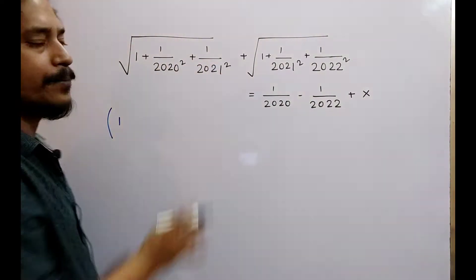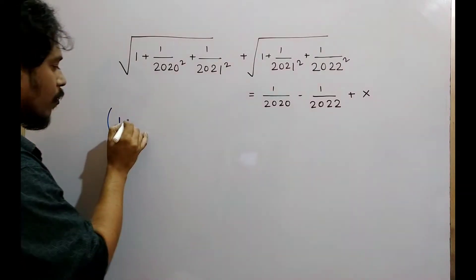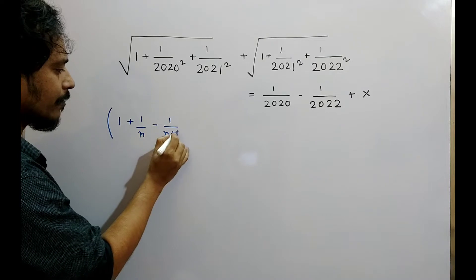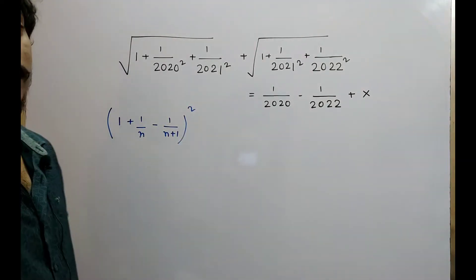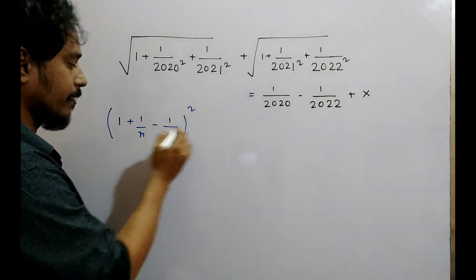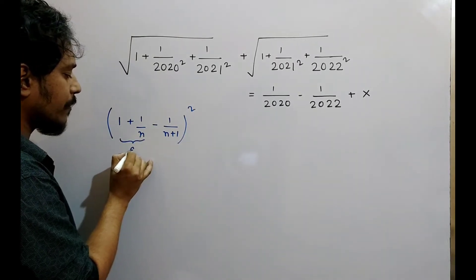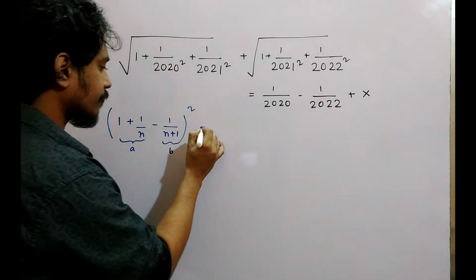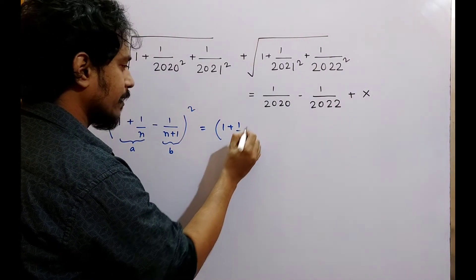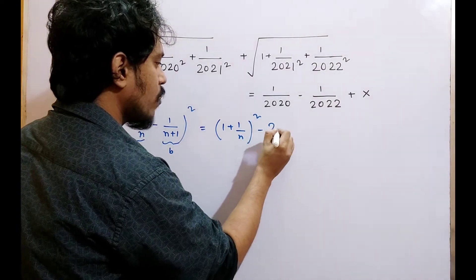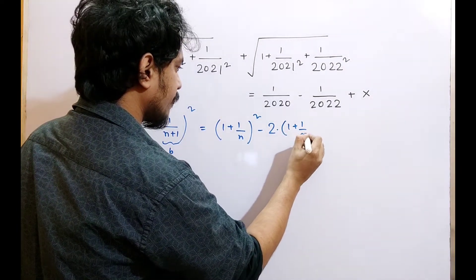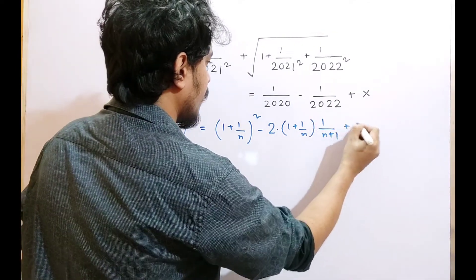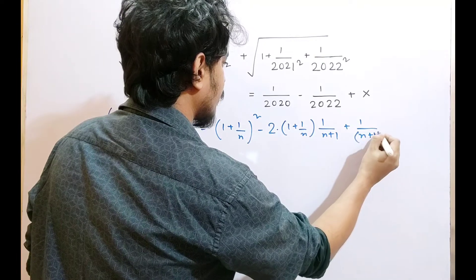These two terms are consecutive terms. 1 plus 1 by n minus 1 by n plus 1. This result is whole square. This term is a and b, so a minus b whole square.